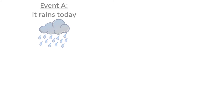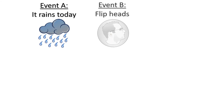Let's consider two events. The first event is that it rains today. The second event is that on one flip of a fair coin, it lands heads face up. If you told me for certain you knew it was going to rain today, that wouldn't change my estimate of the chance of flipping heads on the coin. No matter if it rains or doesn't rain, there's still a 50% chance of the coin turning up heads.